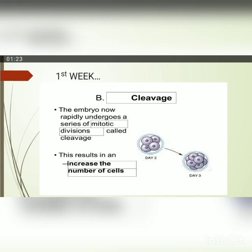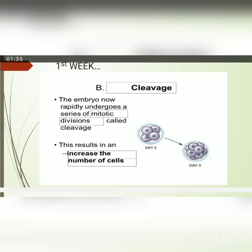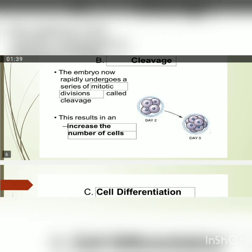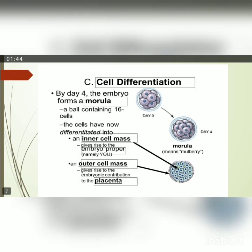Once fertilization is done, the very next step is cleavage. The embryo rapidly undergoes a series of mitotic divisions, which results in an increase in the number of cells. This whole process is completed in three days.